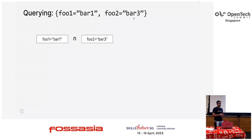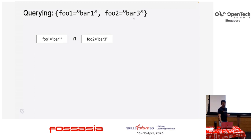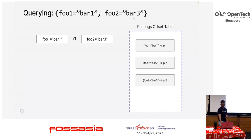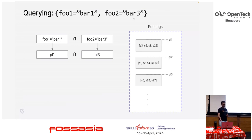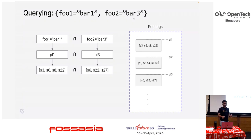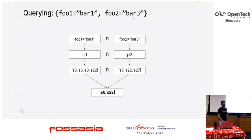Now we'll see how we use the index to query. Let's say I want to query — in Prometheus fashion, this should fetch series that have both labels: foo1 equals bar1 and foo2 equals bar3. We take one matcher at a time. We look at foo1 equals bar1 and foo1 equals bar2 against the posting offset table — now we know it matches a particular set of posting lists. We have the reference where the posting list exists. We take the reference, look at the postings table, and get the set of series references that actually match these label values. Now we have two sets of series references — we just intersect them, and finally we know that the series referenced by S6 and S22 match the query.